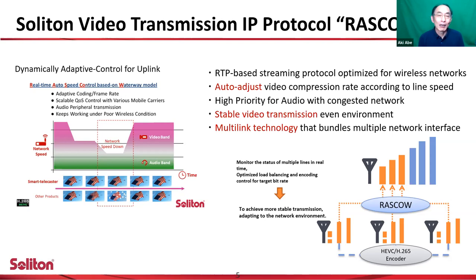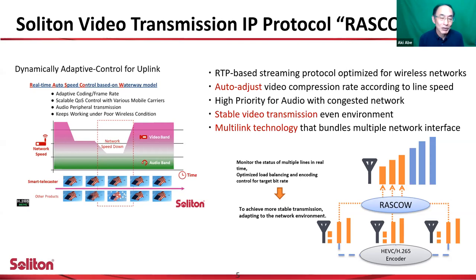This is one-way video transmission. For audio, we have two-way communication, so you can talk from the receiver side to the encoder side. Now let's talk about the backend protocol, which is RASCAL. This is based on H.265 compression, and we do video processing and analytics optimization using our own technology called RASCAL — Real-Time Auto-Speed Control Based on Waterway Model.